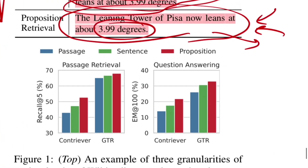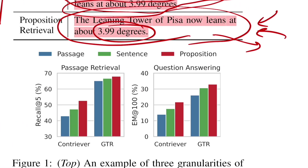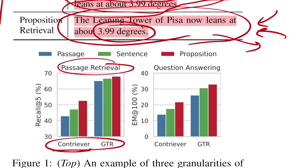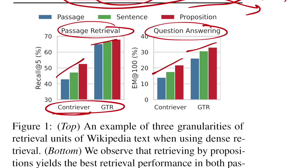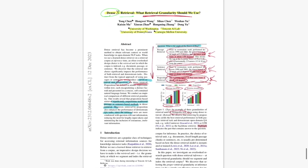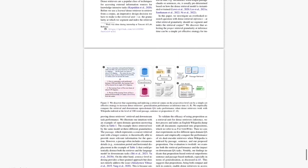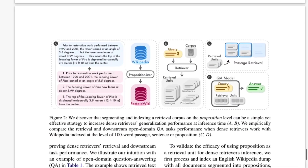For two retrievers, for the task of passage retrieval and question answering, consistently proposition units are better compared to using passages or sentences, and this is happening on Wikipedia text. Let's move forward and see what this exactly is.